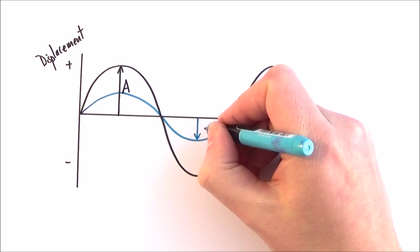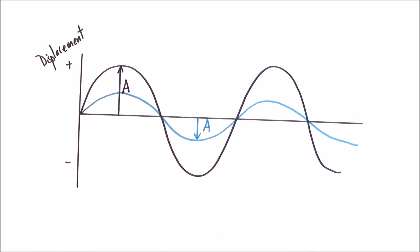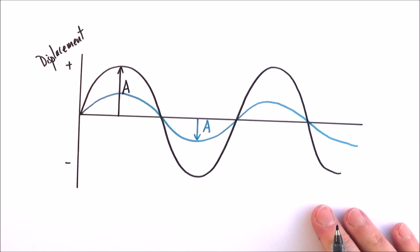If this other wave has an amplitude of half of the other one, we can look at the difference in the intensity or the power of these two waves.